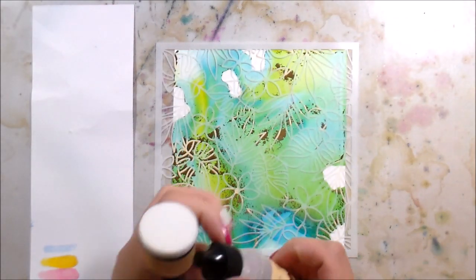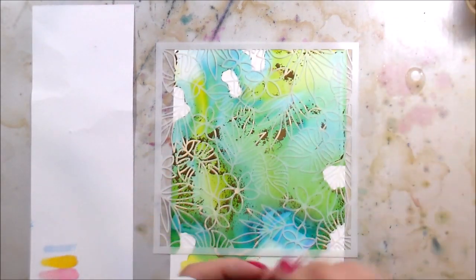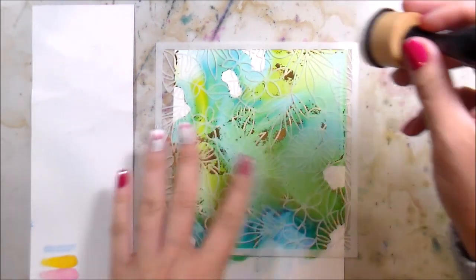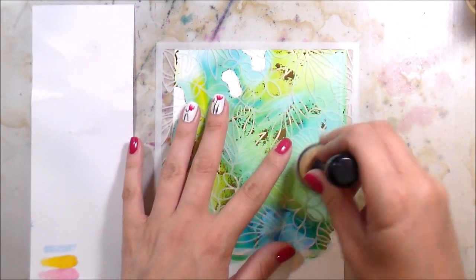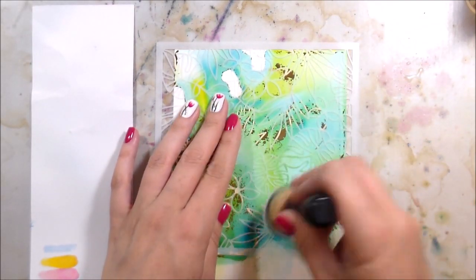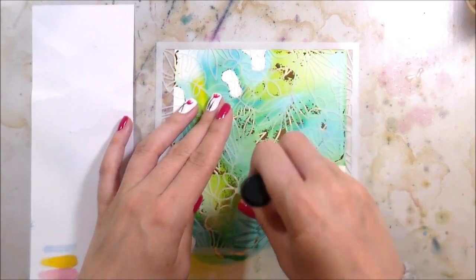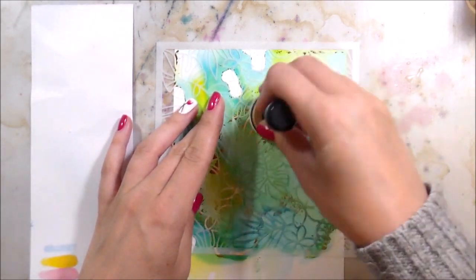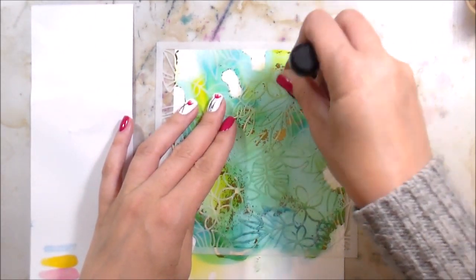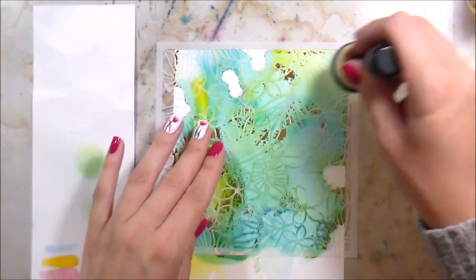Here's where the stenciling comes in. I'm going to lay this tropical background stencil down and get a scrap piece of paper. I have a Ranger ink foam, just like you would do with Distress Ink. I'm going to pick up some of that alcohol blending solution.